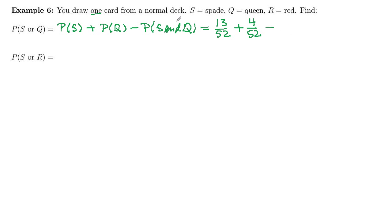And then we subtract out our overlap, spade and queen. There is one card that is the queen of spades out of 52, which gives us 16 out of 52.